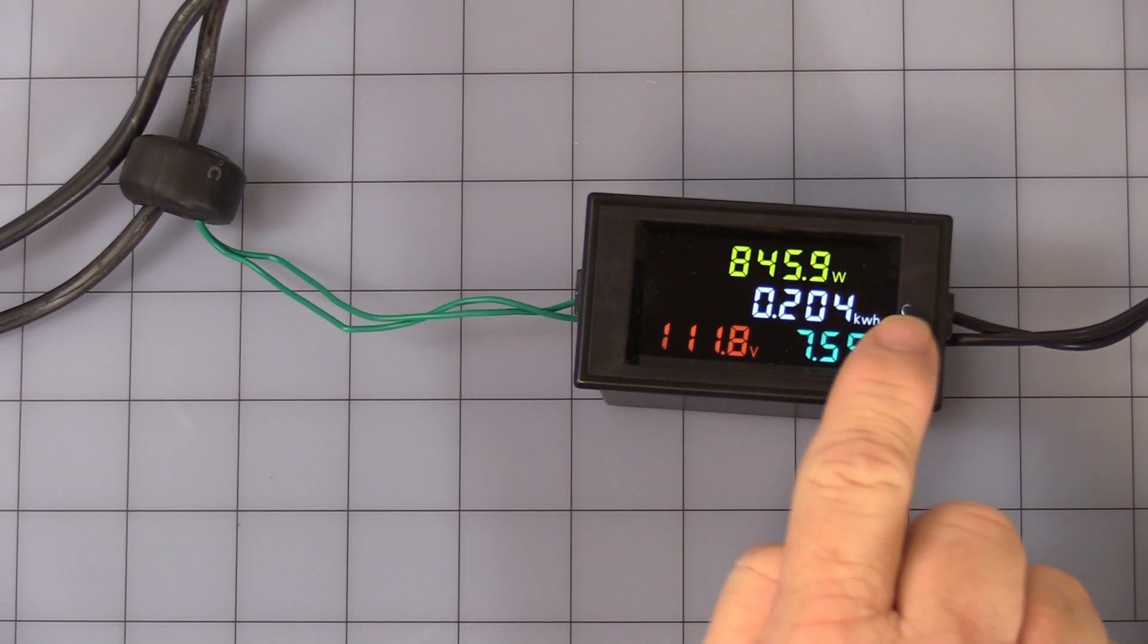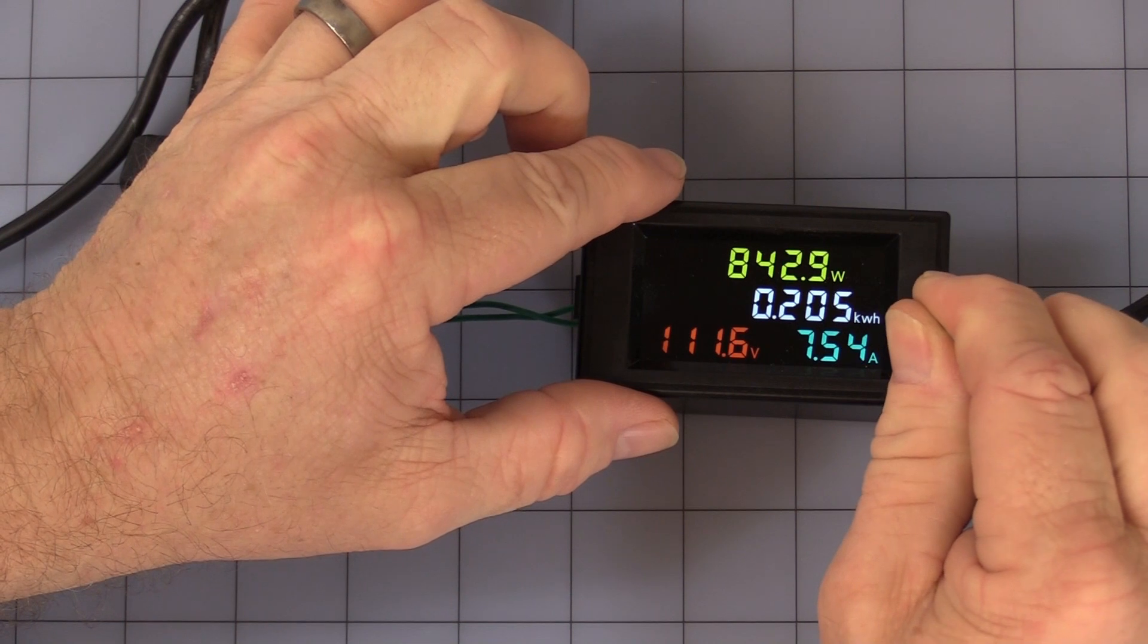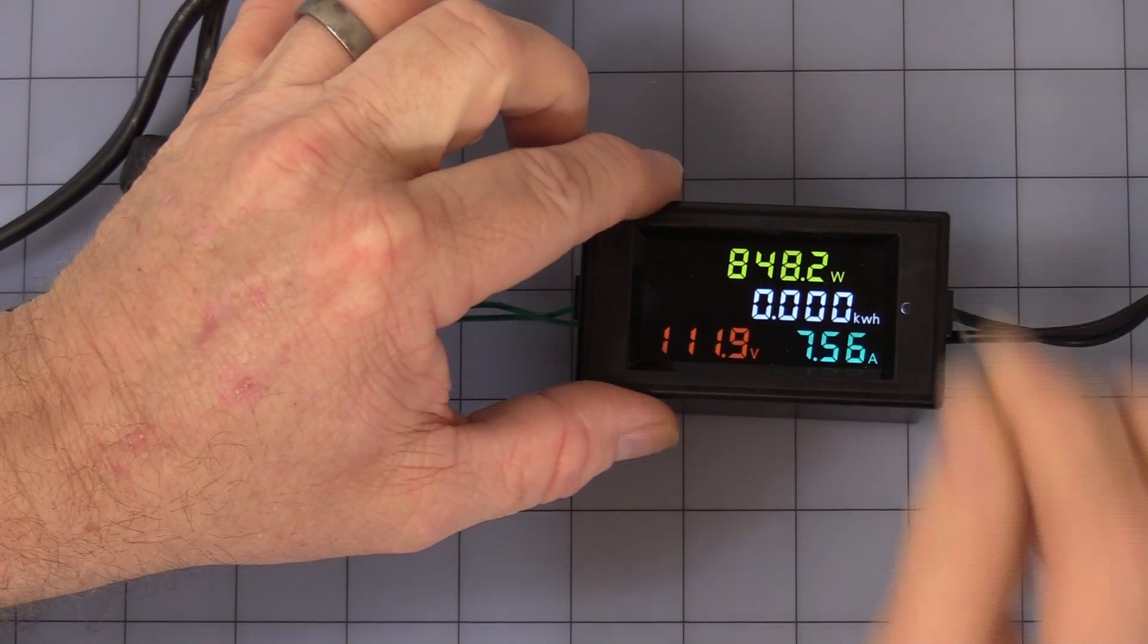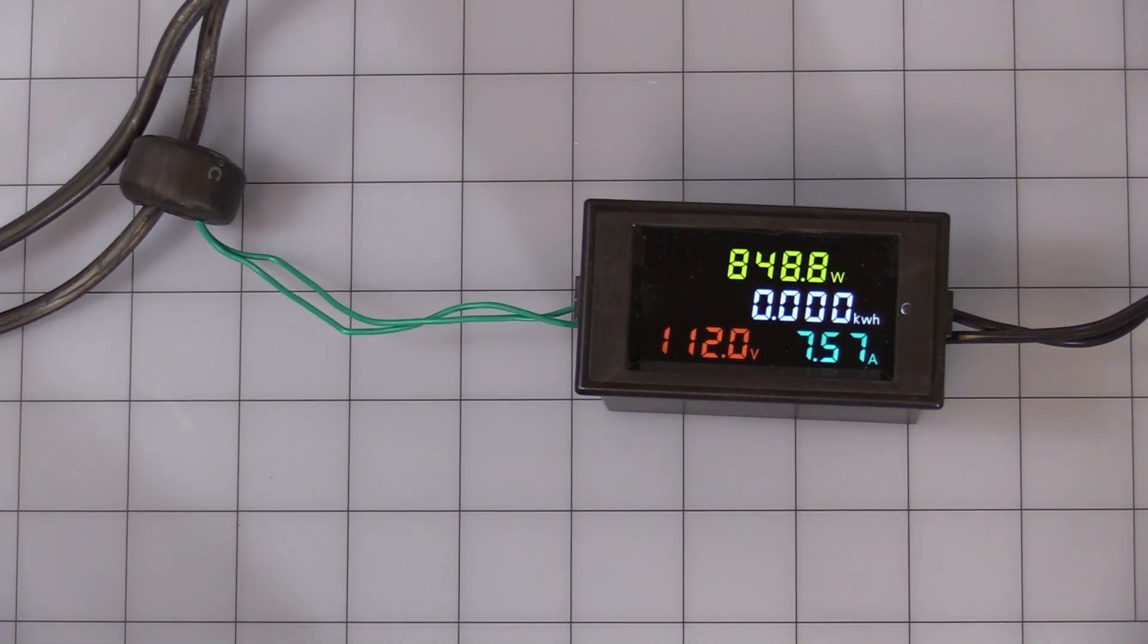There is a little button here if you want to reset. It's a little recess, so you'll have to find it. Press it for a few seconds and it resets to zero. And once again, you see now that the load is still on, it starts counting up again.